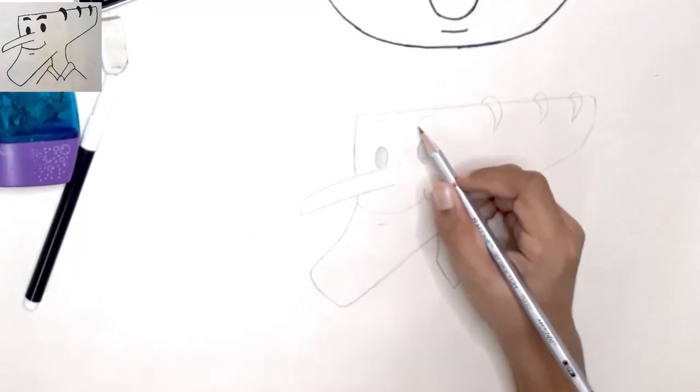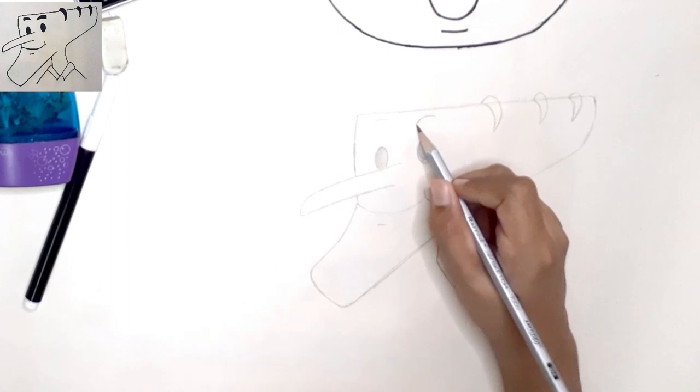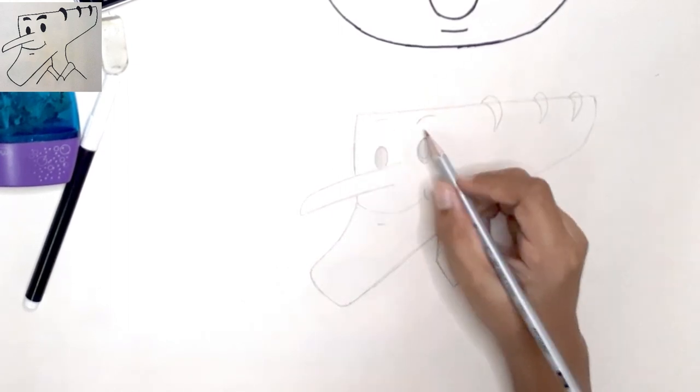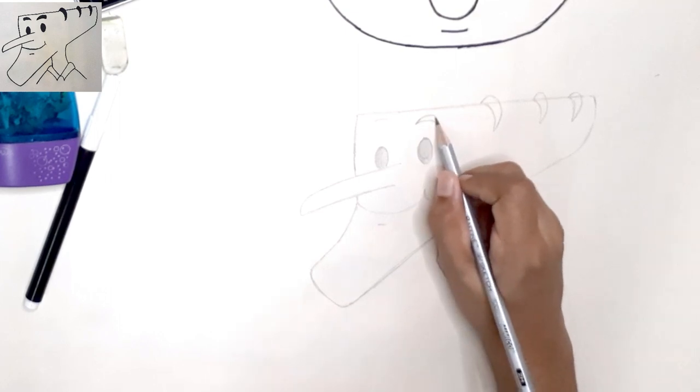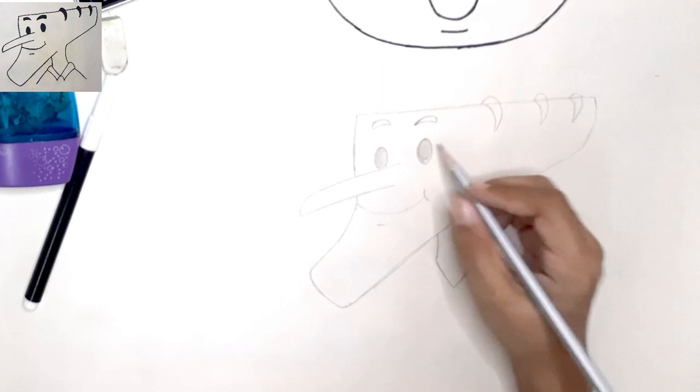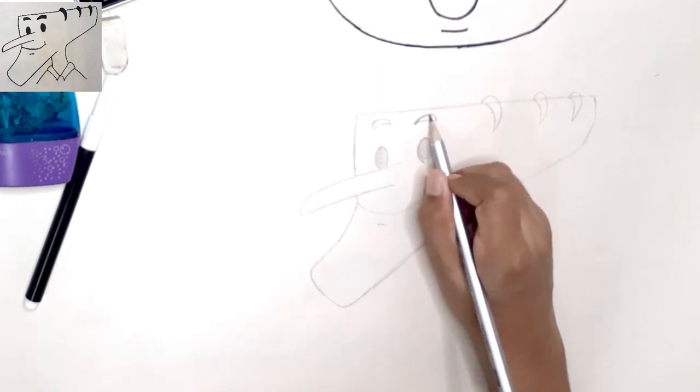Then do the finalization for the eyebrow. The eyebrow on the inner part should be a pointy end. Remember to make this eyebrow a bit bigger since it's closer to the point of view. And then color them.